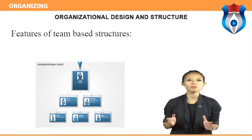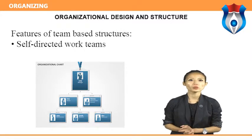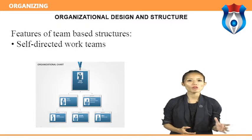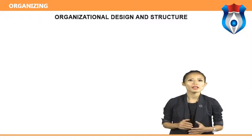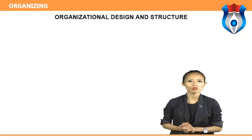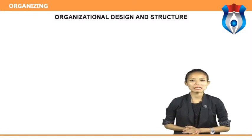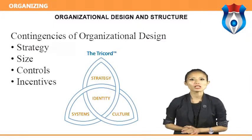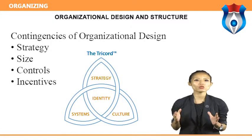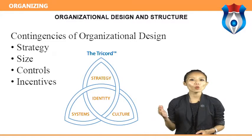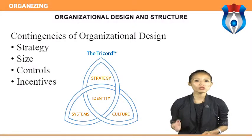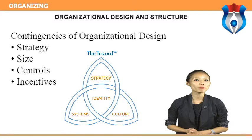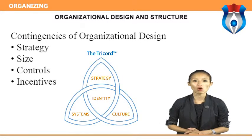Features of team-based structures include self-directed work teams, teams organized around work processes, and a very flat span of control. Network organizational structure is another modern structure. Contingencies of organizational design: what matters is that the overall organization design is aligned with the business strategy and the market environment in which the business operates.